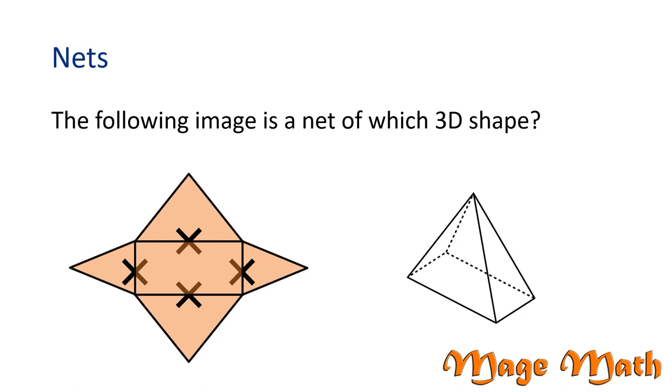Did you know that all pyramids have triangular sides? The specific name of a pyramid is determined by the base shape. In this case, the base shape is a rectangle. So that's why our net turned into a rectangular-based pyramid.